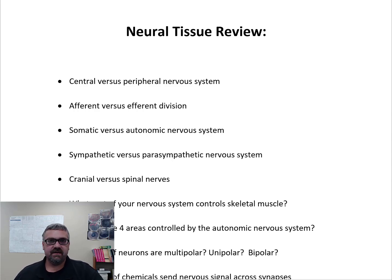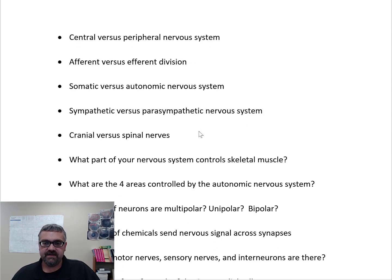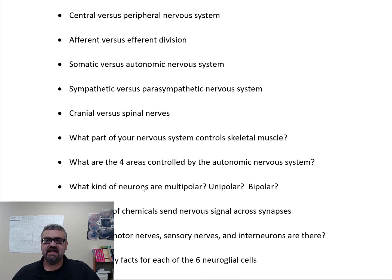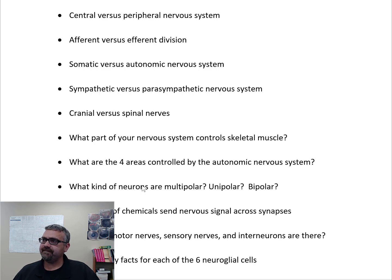This is the neural tissue review. There's a lot of terminology here because we're basically mapping out the entire nervous system, which will be covered in later chapters. The first way to classify parts of the nervous system is central versus peripheral. The central nervous system is the brain and spinal cord; the peripheral nervous system is everything else.